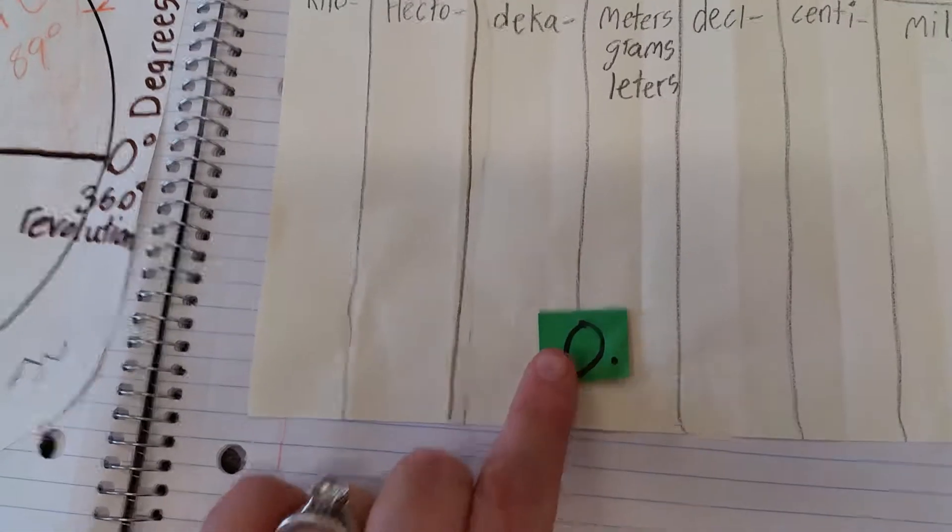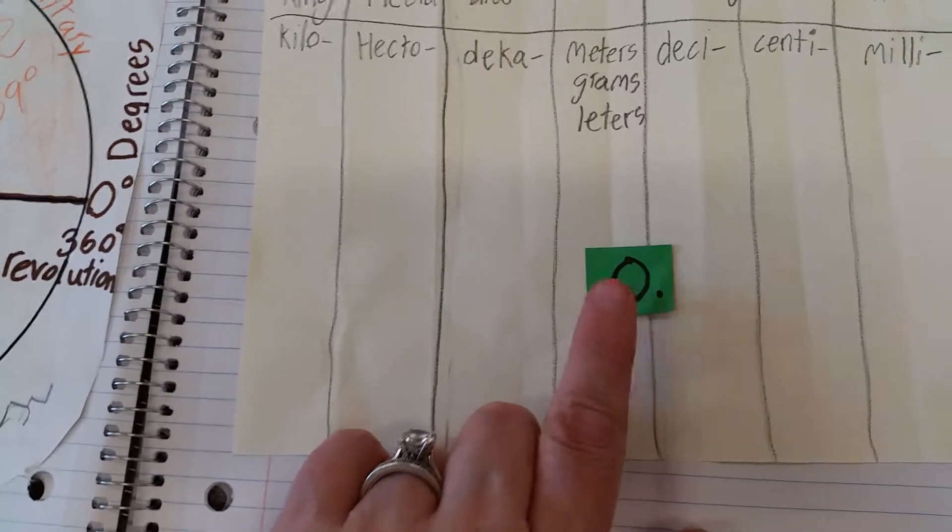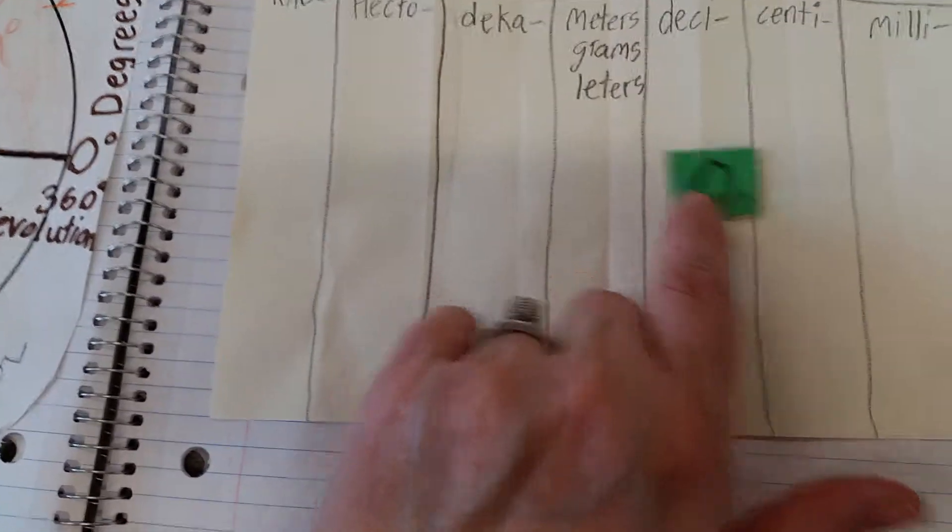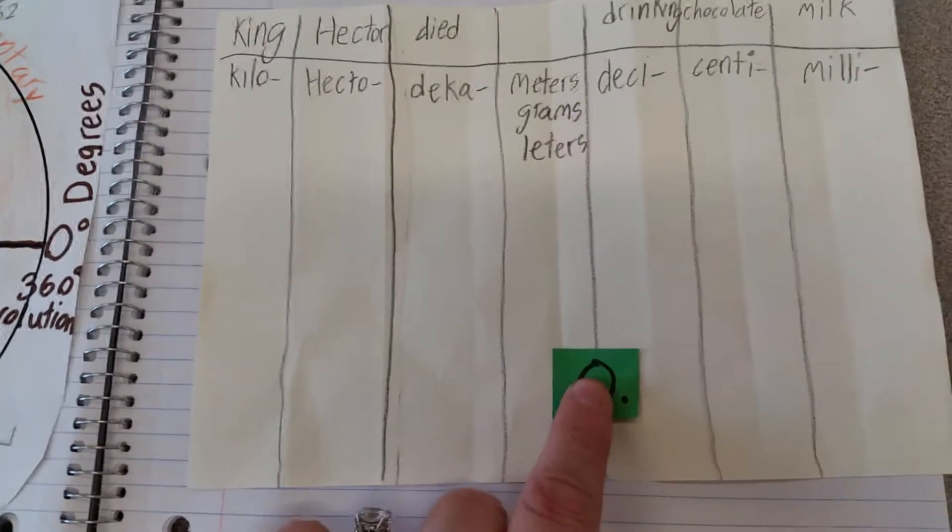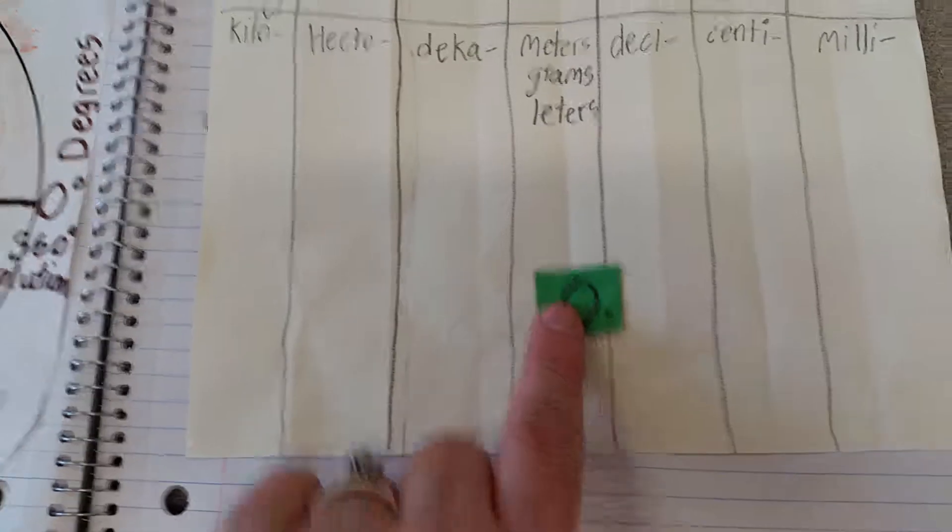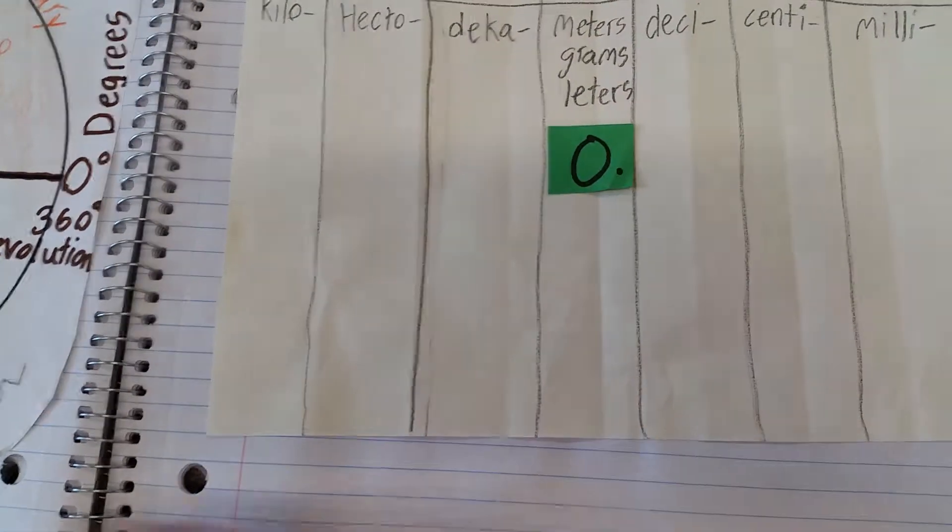We call this our froggy chart. That's because this little guy here is green. This is the froggy who does the hopping. So let's say we want to turn meters into millimeters. So we start by putting the froggy on meters.